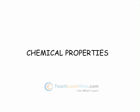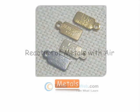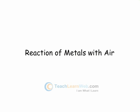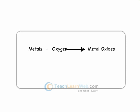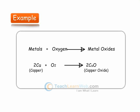Chemical Properties of Metals: Reaction of metals with air. Metals combine with oxygen to form metal oxides. Example: copper, when reacts with oxygen, forms copper oxide.